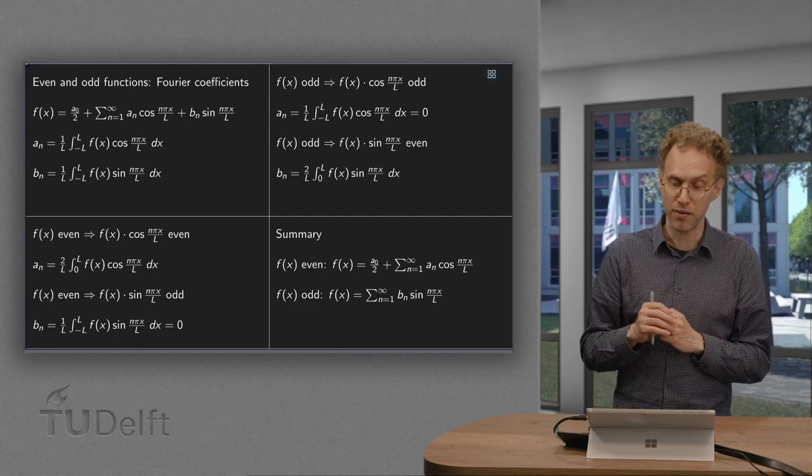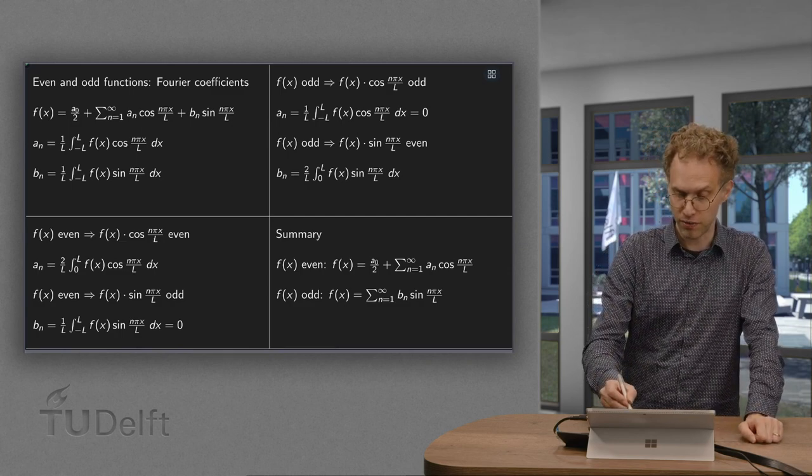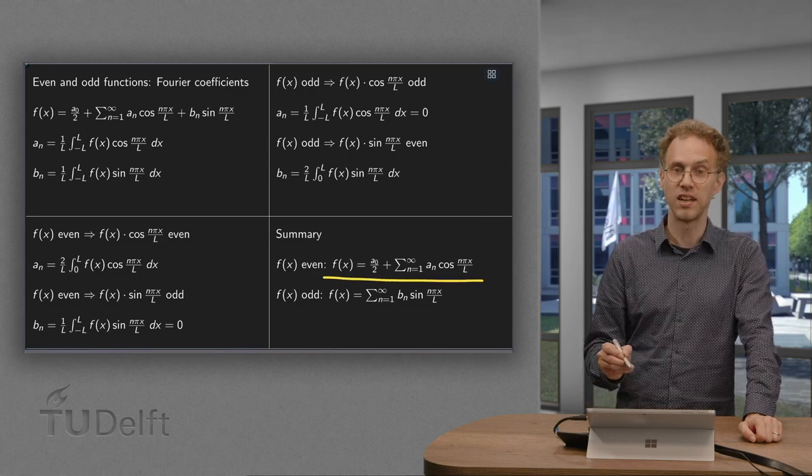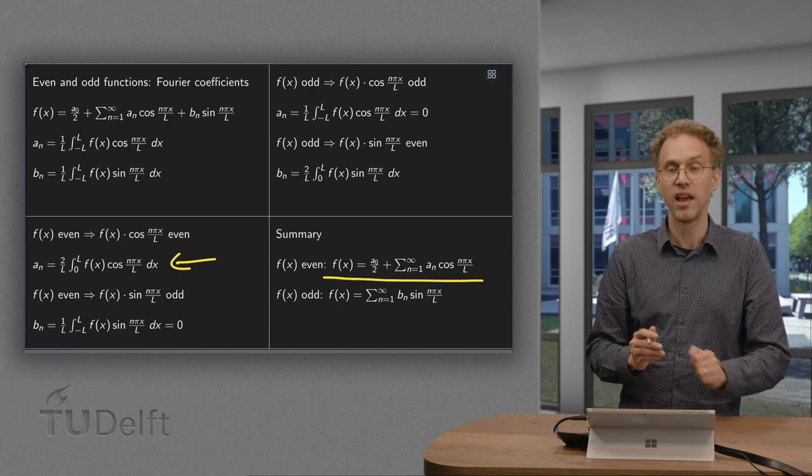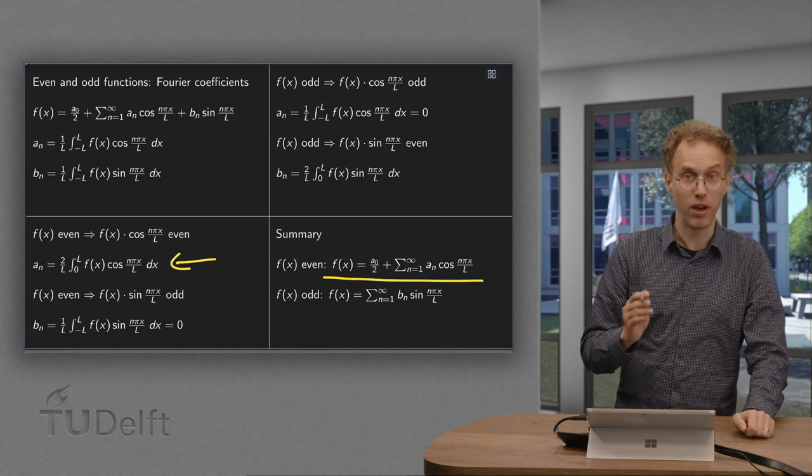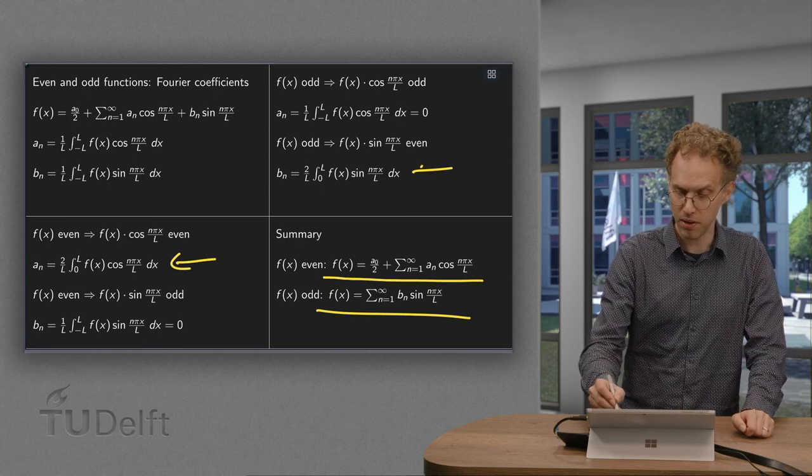So to summarize, if f of x is even, we only have the a_n. So the Fourier series looks like that and the coefficients a_n are given over there. And if f of x is odd, we only have the b_n. Fourier series looks like this and the b_n are given over there.